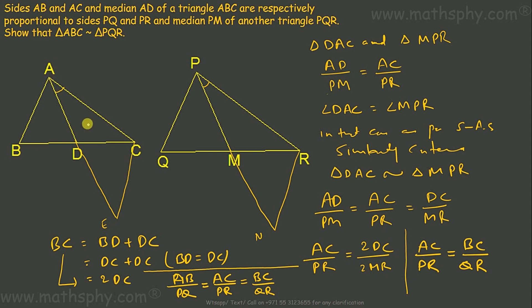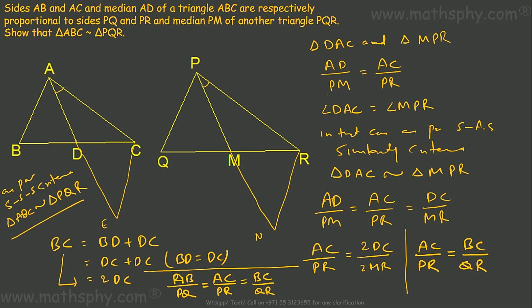In triangles ABC and PQR, we have AB/PQ = AC/PR = BC/QR. Therefore, by the SSS similarity criterion, triangle ABC is similar to triangle PQR, as all corresponding sides are proportional. Hence proved.